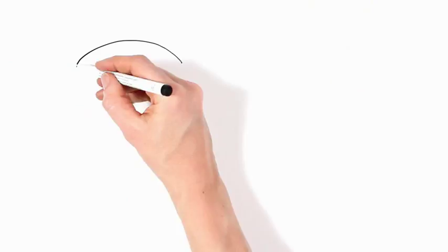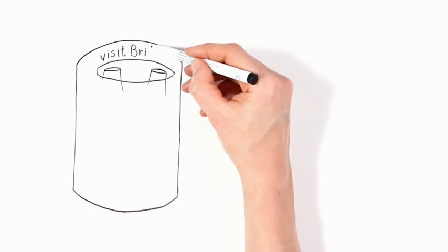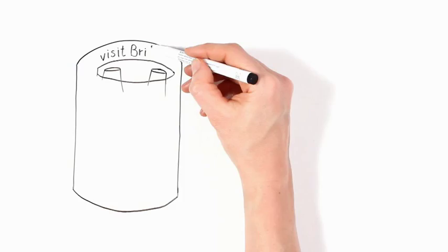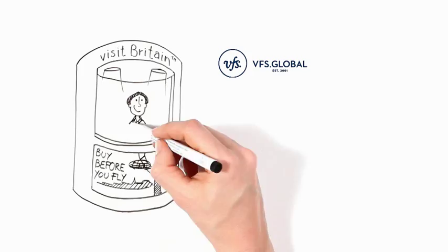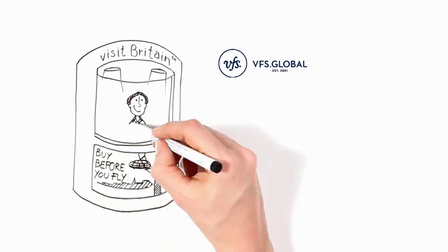Jay notices a Britain travel shop kiosk, where he buys a guide to events and places in Britain, and also purchases his Oyster card for travel on London transport. He's really happy that it's all been so easy and convenient for him.